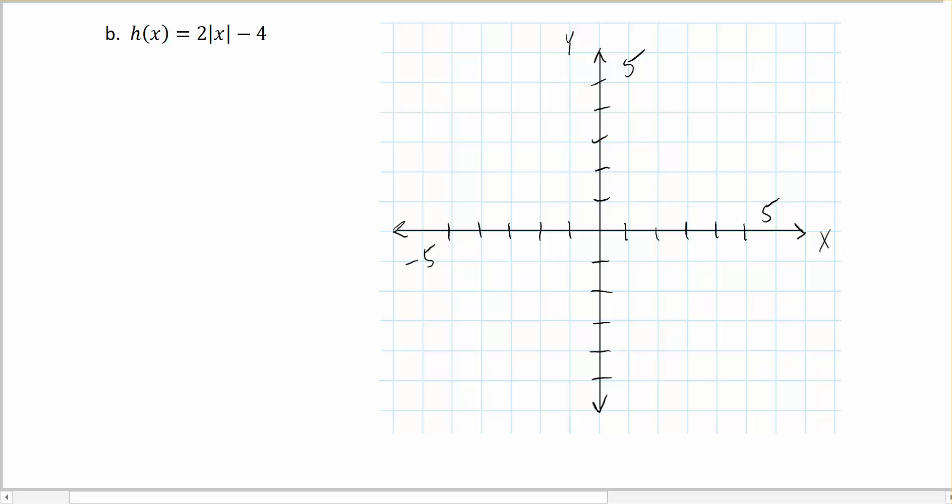Let's look at another transformation. Here we have h of x is equal to 2 times the absolute value of x minus 4.